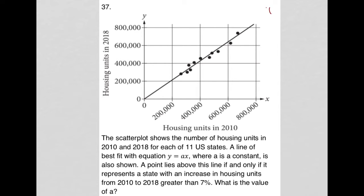This question is a diagram question. More specifically, we have a graph provided here. This is a scatter plot with a line of best fit. The x-axis is housing units in 2010, and the y-axis is housing units in 2018. The scatter plot shows the number of housing units in 2010 and 2018 for each of 11 U.S. states. Each dot represents a state.